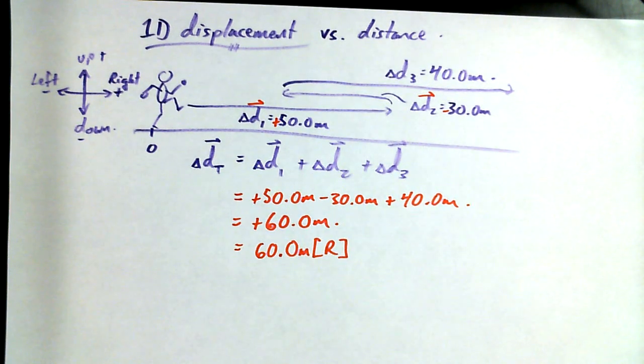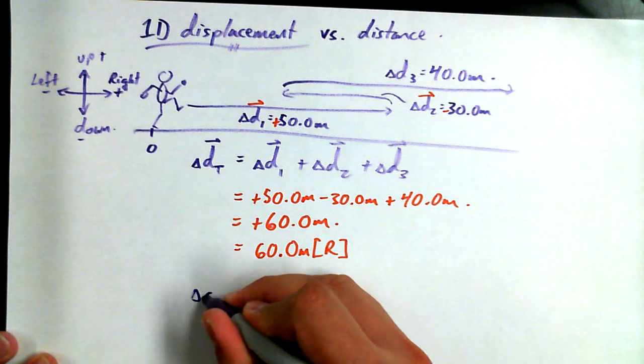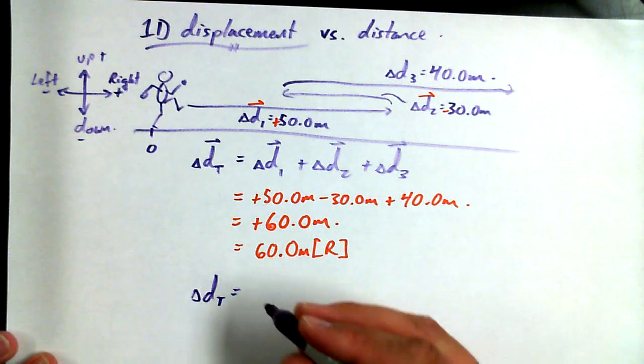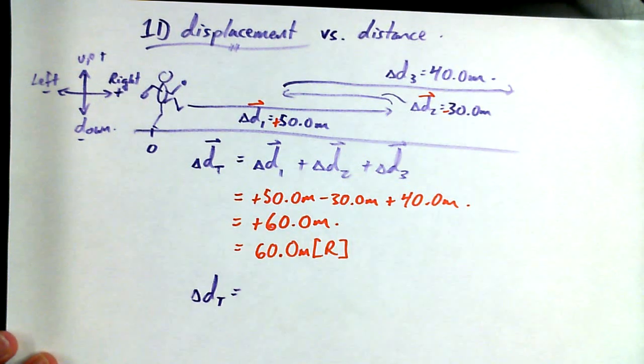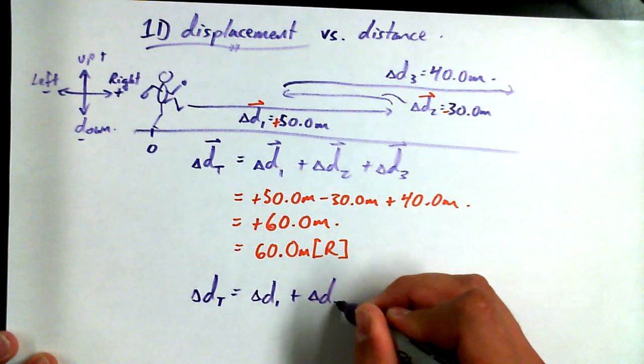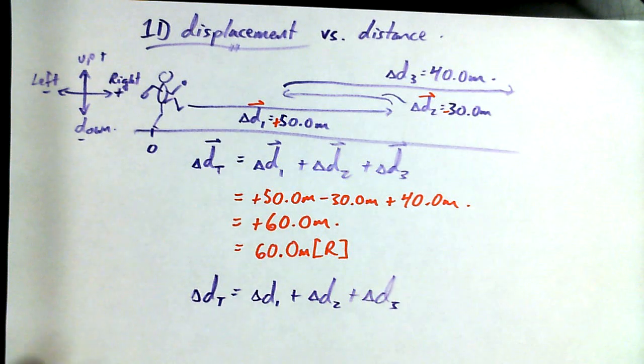Now, that's the displacement. The distance, on the other hand, is how much ground little Timmy actually covered. Like, how many steps he kind of took. Delta D total without an arrow is going to give us a different answer. People say, what was the distance you walked today? Well, I stayed in the building all day, but I did a lot of walking up and down the science hallway. I did a lot of walking around my classrooms. I walked a lot of distance.